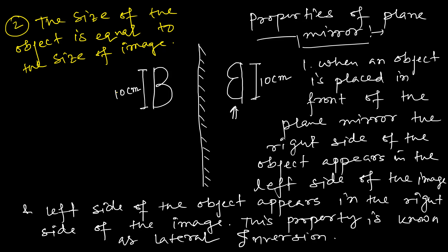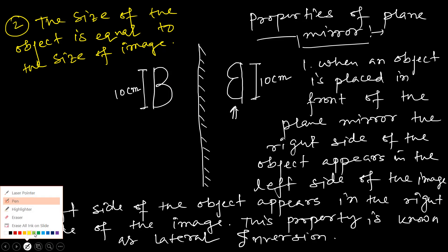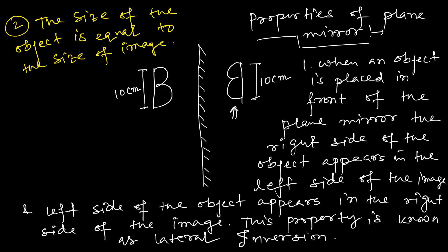Suppose the letter D is luminous in nature. The light rays emitting from the letter D are falling on the mirror surface. This is the first light ray falling on the mirror surface and now it is being reflected. From the bottom portion of the letter, another light ray falls on the mirror surface and is reflected. As you can see, these two reflected rays are not meeting — so it will not form a real image.